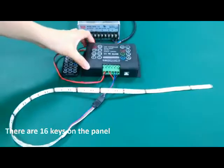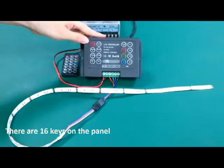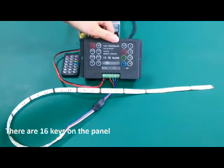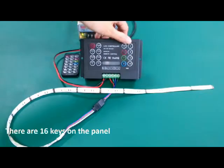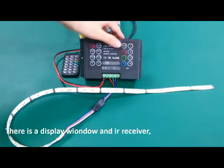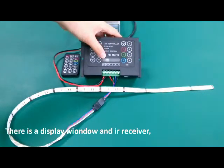There are 16 buttons on the panel. They have the same function as the IR remote, but there are only 4 DIY modes on the panel. There is a display window.